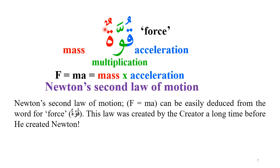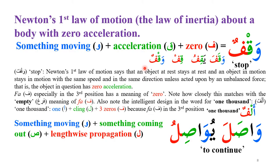In Ku'atun, the Ta Marbuta represents mass, the Qaf represents acceleration, and the Waw represents the multiplication. So from the single letters you can very easily get the formula F = ma. Also, Newton's first law — that a body at rest stays at rest, or if moving continues at constant speed unless an outside force acts on it — this is the law of inertia, known to every school child.